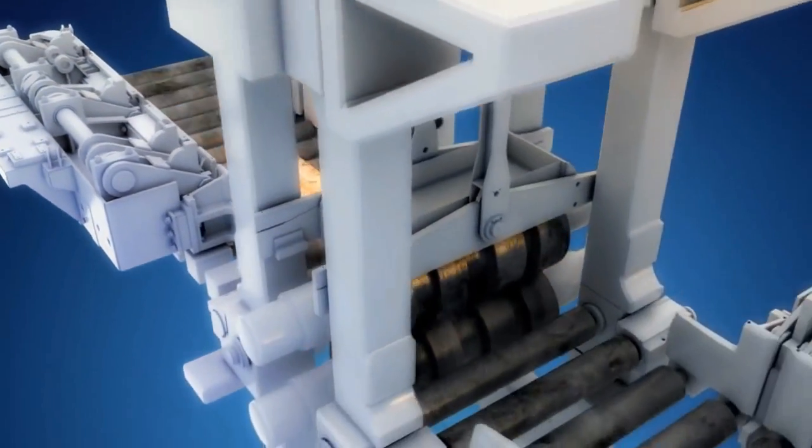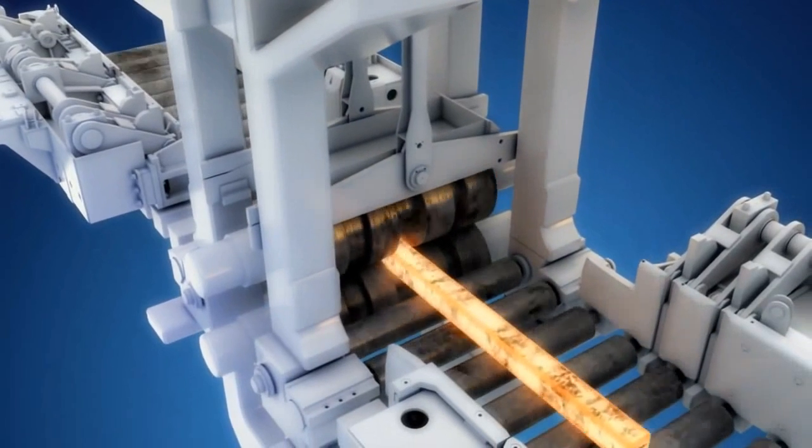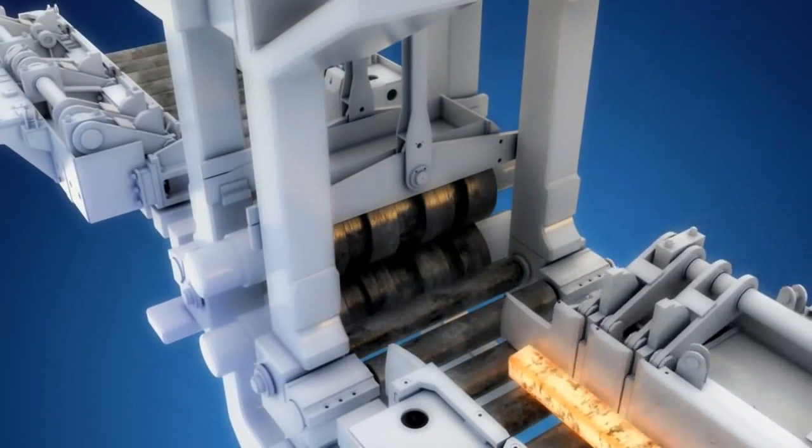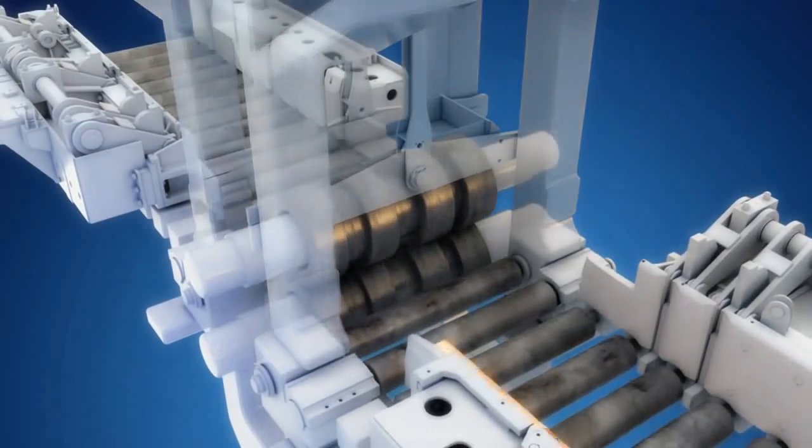The continuous cast material or ingots are pre-rolled in a blooming mill and then transported to a heater and the heating furnace to be reheated to the correct rolling temperature.